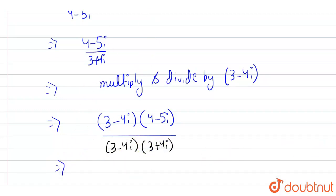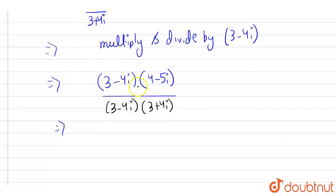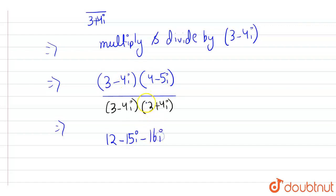In the numerator, we simply multiply: 3 × 4 = 12, then 3 × (-5i) = -15i, then -4i × 4 = -16i, then -4i × (-5i) = +20i². Since i² = -1, the last term becomes -20. So this is our numerator.